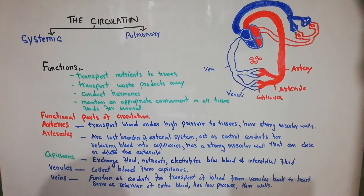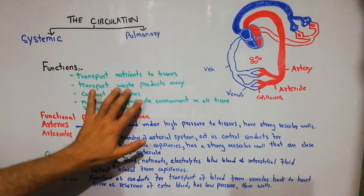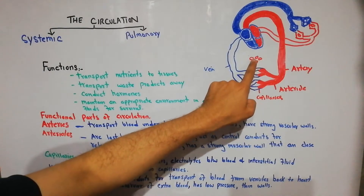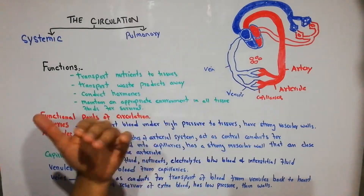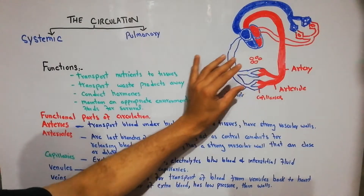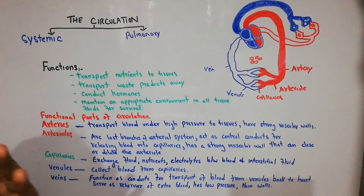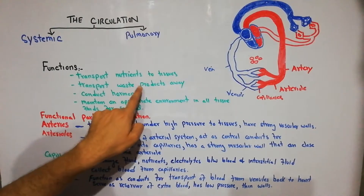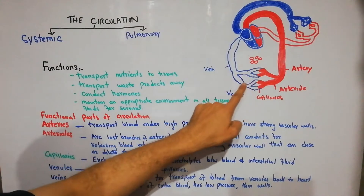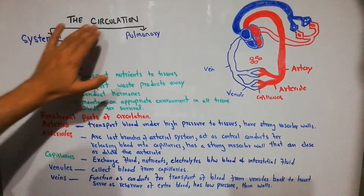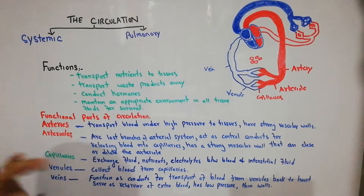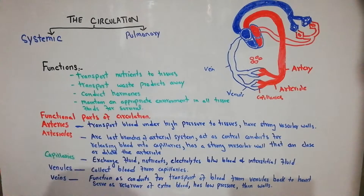The second function of the circulation is to transport waste products away from the tissue. The cells of the tissue take in nutrients, perform metabolism, generate energy, and also produce a lot of waste products. These waste products are also removed with the help of circulation. So circulation is not only providing nutrients to the tissue but also taking away the waste products from the cells.